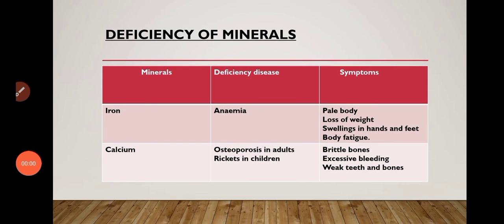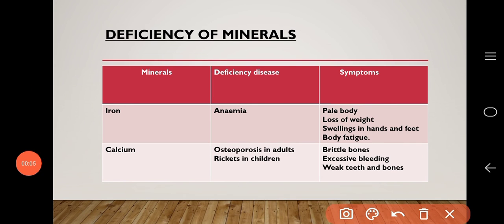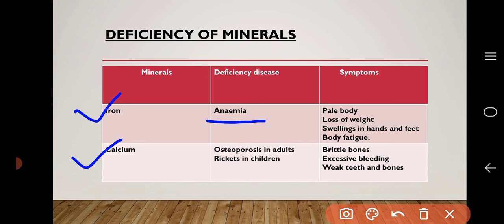Now we'll see deficiency of minerals. Deficiency of iron causes anemia; symptoms are pale body, loss of weight, and swelling in hands and feet. Lack of calcium causes osteoporosis in adults and rickets in children; symptoms are brittle bones, excessive bleeding, and weak teeth and bones.